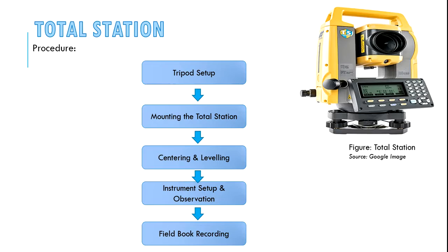Total station — moving forward, under the methods of cadastral surveying, we have total station, which is an electronic tachymeter. It is very accurate and applied for measuring fixed boundaries. It is mostly used as it provides better accuracy compared to other traditional methods. The procedure of total station is shown in the figure.